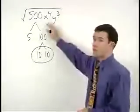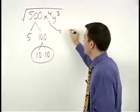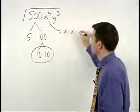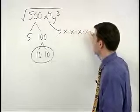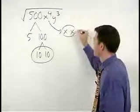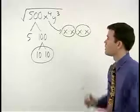Think of x to the fourth as x times x times x times x. So we have two pairs of x's.